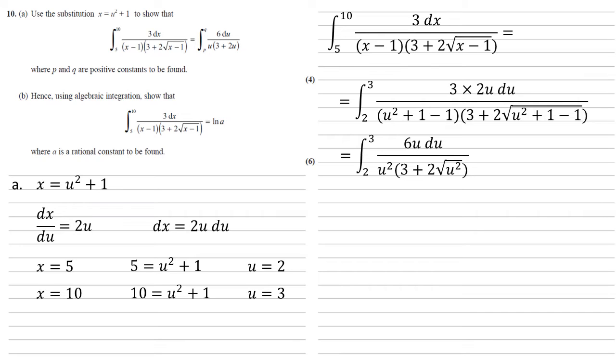Now we've got u top and bottom, so one of them can cancel out. And also on the bottom, we've got root of u squared, which will just become u. So we end up with the integral between 2 and 3 of 6du all over u times 3 plus 2u, as required.